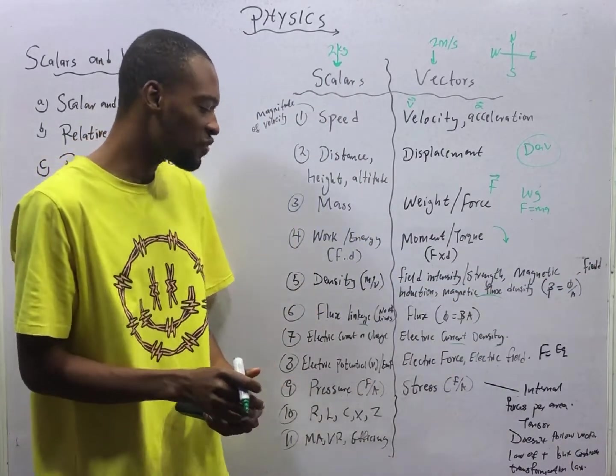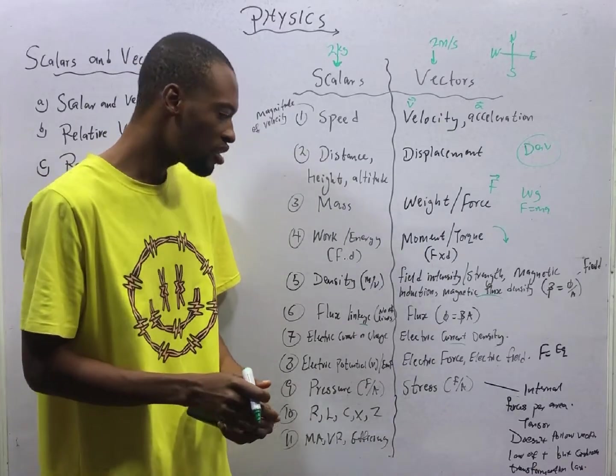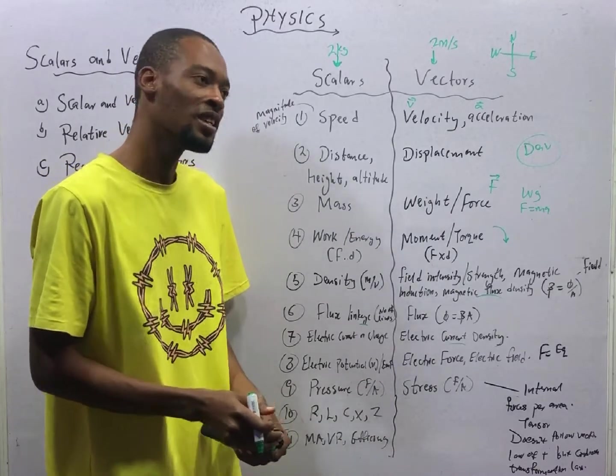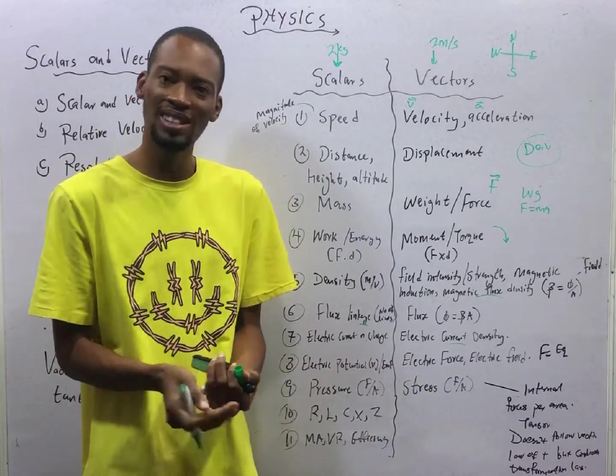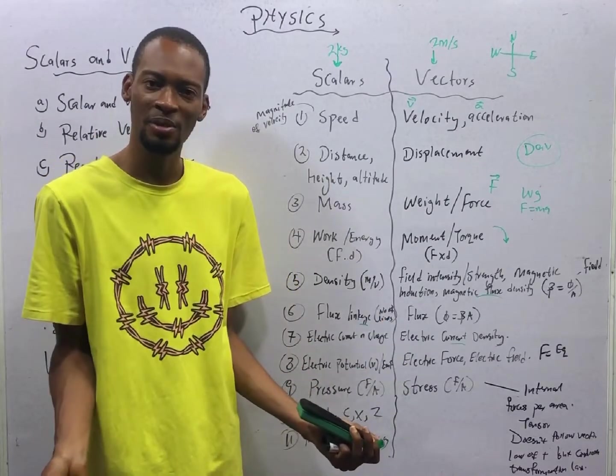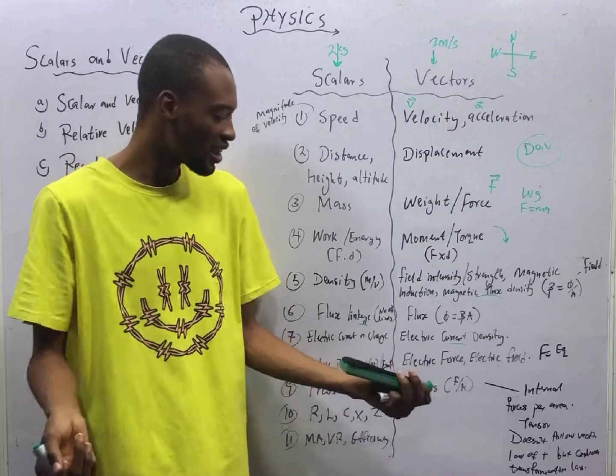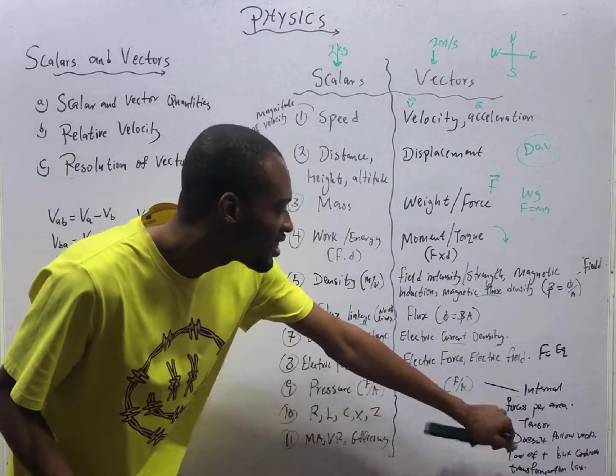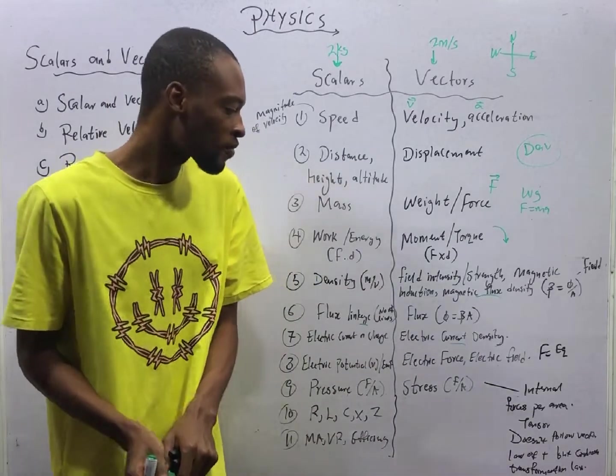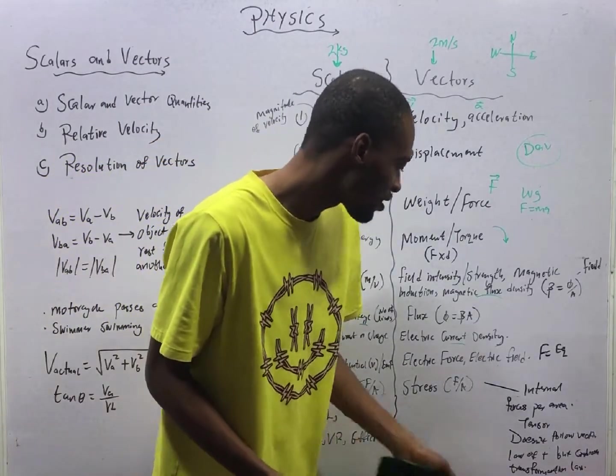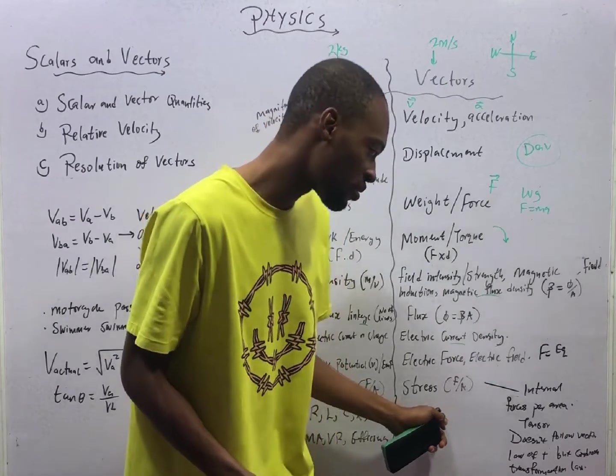Pressure is force over area. Stress is force over area. But pressure is a scalar quantity. Because they are only described by magnitude, pascals. But stress is internal force per area. Internal force per area.